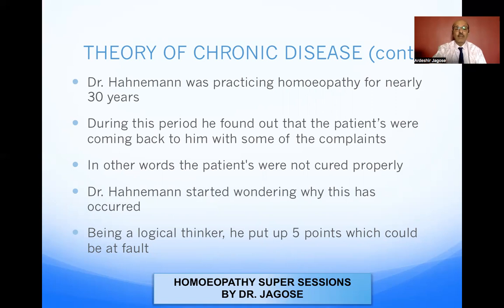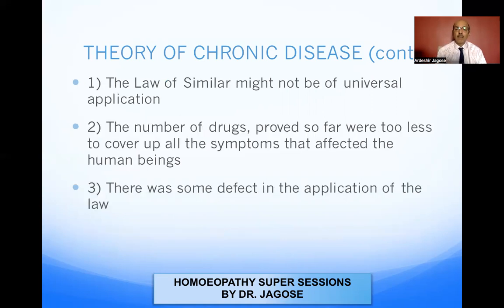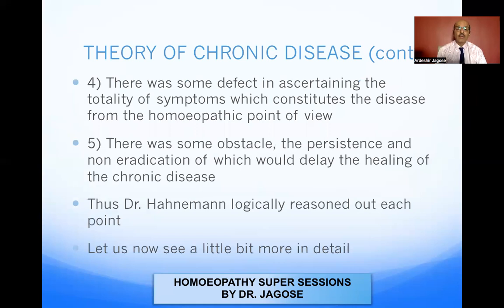Now let us see what these five points are. First, the law of similars might not be of universal application. Second, the number of drugs proved so far were too few to cover all the symptoms affecting human beings. Third, there was some defect in the application of the law. Fourth, there was some defect in ascertaining the totality of symptoms which constitutes the disease from a repetitive point of view. And fifth, there was some obstacle, the persistence and non-eradication of which would delay the healing of the chronic disease.